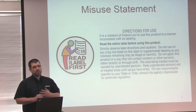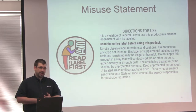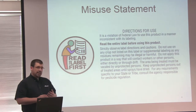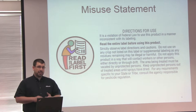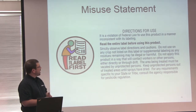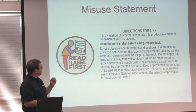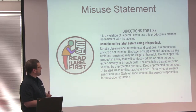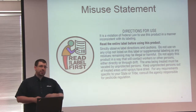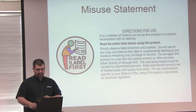It is your responsibility to read the label. If you do not understand the label, find someone that can explain it to you. The label is a federal document — it is federal law. Every pesticide label has this phrase on it: it is a violation of federal law to use a product in a manner inconsistent with its labeling. If you do something that is not on the label, it is called off-label and it is illegal.